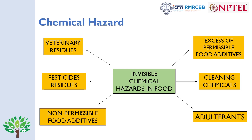Chemical hazards include veterinary residues — many farm products such as eggs are contaminated from residues from chickens or ducks — pesticide residues in field-based products, non-permissible food additives, excess of permissible food additives, cleaning chemicals used to clean food products, and adulterants added to food to increase value, taste, or sellable qualities.